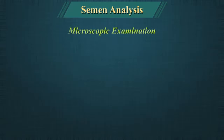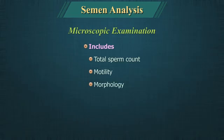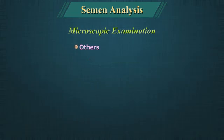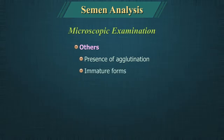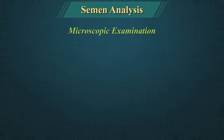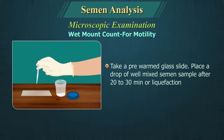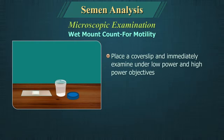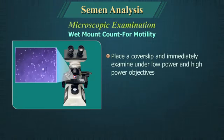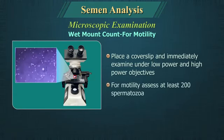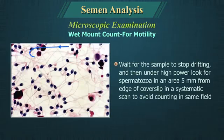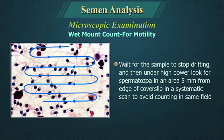Microscopic examination of semen includes total sperm count, motility, morphology, vitality, and others such as presence of agglutination, immature forms, pus cells and miscellaneous factors. Wet mount cover slip preparation: Take a pre-warmed glass slide, place a drop of well-mixed semen sample, place a cover slip and immediately examine under low power and high power objectives. For motility, count at least 200 spermatozoa. Wait for the sample to stop drifting, then under high power look for spermatozoa in a systematic scan, 5 mm from the edge to avoid counting in the same field.